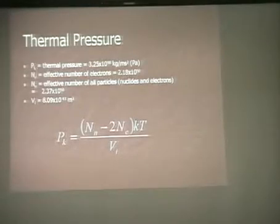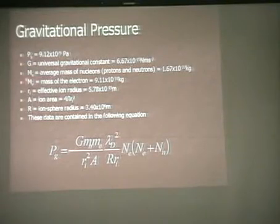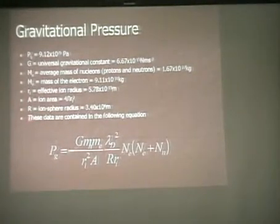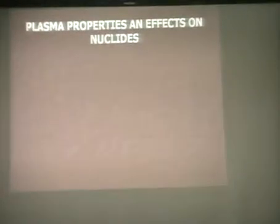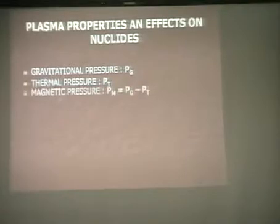To calculate gravitational pressure, you need the gravitational constant, the average mass of the nucleons, the mass of the electrons, and the effective ion radii for each of those nuclides, which you can determine by calculation, plus the ion sphere radius for all the ions in the plasma. All of that goes into the equation to arrive at the gravitational pressure. The properties that affect the nuclides are the gravitational pressure and the thermal pressure.